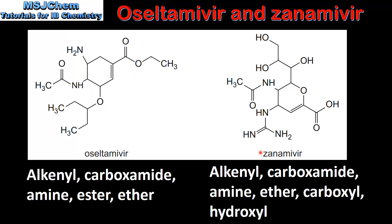In Zanamivir we have an alkenyl group, a carboxamide group, an amine group, an ether group, a carboxyl group, and three hydroxyl groups. The presence of the three hydroxyl groups means that Zanamivir is more soluble in polar solvents than Oseltamivir.